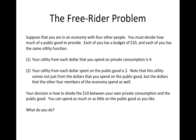To see how the free rider problem works, consider this hypothetical example. Suppose you are in an economy with four other people and must decide how much of a public good to provide. Each of you has a budget of ten dollars and the same utility function. Your utility from each dollar spent on private consumption is four, and your utility from each dollar spent on the public good is two — including dollars spent by the other four members. Your decision is how to divide the ten dollars between private consumption and the public good.